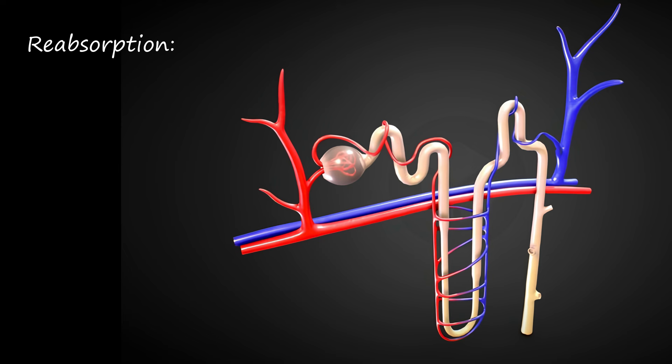The filtrate moves into the renal tubule, which consists of the proximal convoluted tubule, loop of Henle, distal convoluted tubule, and collecting duct.